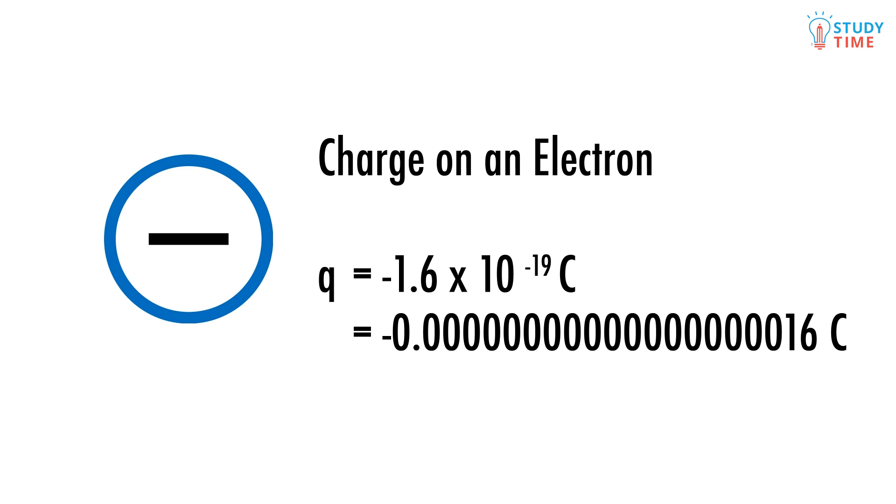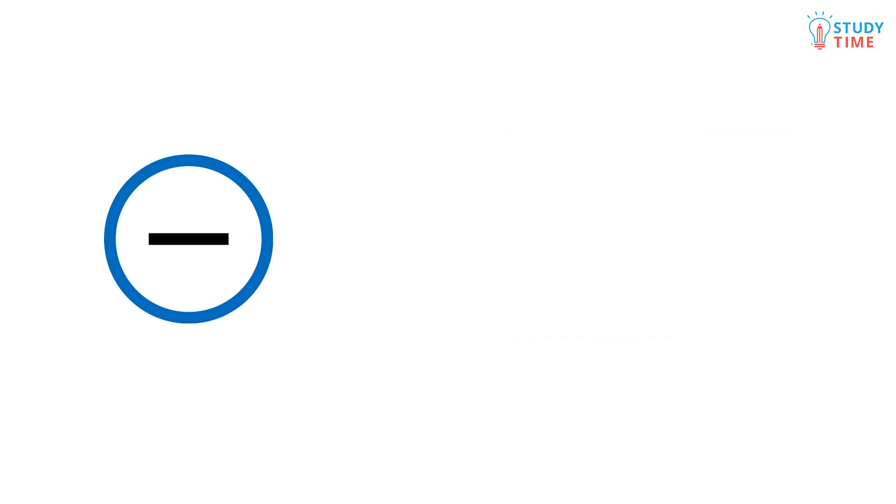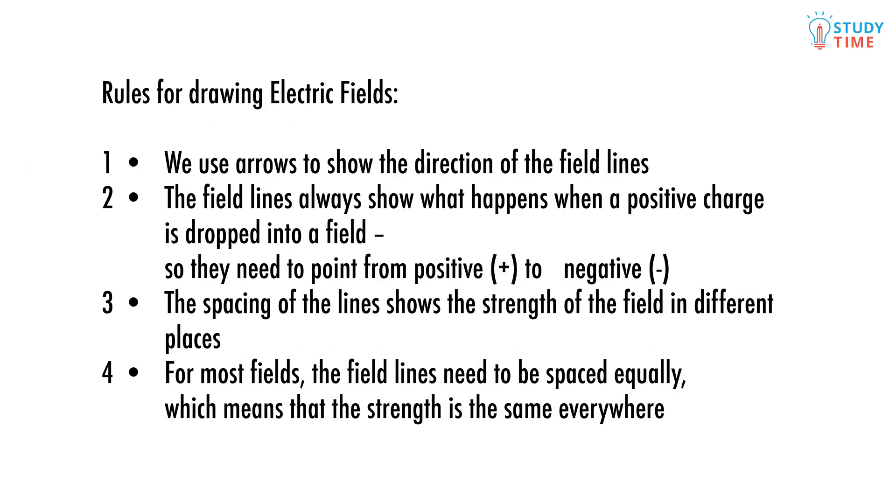We've already mentioned that electric fields are basically invisible. However, that doesn't mean we can't whip out our pencils and try and draw them. We can't just put any old sketch on the page though. There are some important rules that we need to follow. We use arrows to show the direction of the field lines. The field lines always show what happens when a positive charge is dropped into a field, so they need to point from positive to negative. The spacing of the lines show the strength of the field in different places. For most fields, the field lines need to be spaced equally, which means that the strength is the same everywhere.